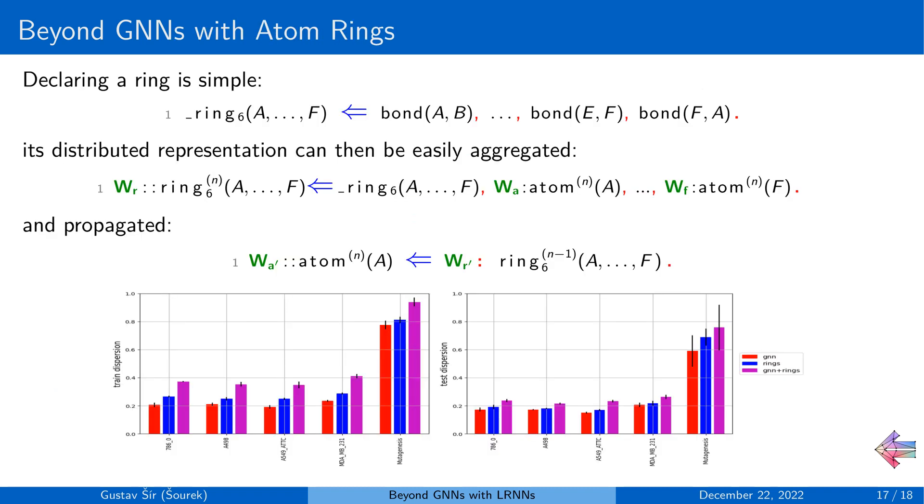So here's just one simple example of what we can do beyond the classic message passing that improves the basic GNN performance in molecular data sets, and that is generalizing the propagation scheme to operate on the level of atom rings instead of just nodes and edges as done in classic GNNs. And again, this is easy to do. You encode a ring as just a conjunctive pattern composed of the individual edges or bonds in the molecules. You add some learnable parameters